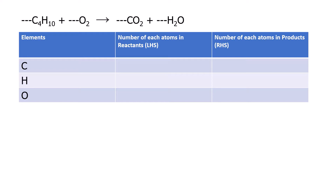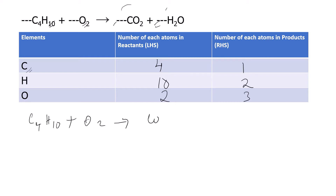Next equation: C₄H₁₀ + O₂ gives CO₂ + H₂O. Counting atoms: carbon has four on the reactant side and one on the product side. Hydrogen has ten on the reactant side and two on the product side. Oxygen has two on the reactant side and two plus one, giving three on the product side.